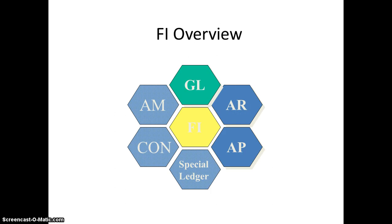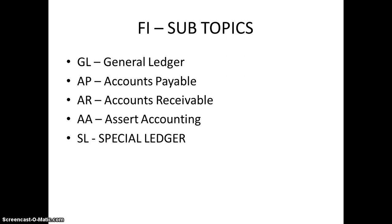This is an ERP solution given by SAP; ECC 6.0 is the latest version that we have. In FI we have various sub-topics: GL, AR, AP, Special Ledger, Controlling, and Asset Management. Controlling comes as a separate module which will be handled separately. GL means General Ledger, AP means Accounts Payable, AR stands for Accounts Receivable, AA is for Asset Accounting, and SL is Special Ledger.